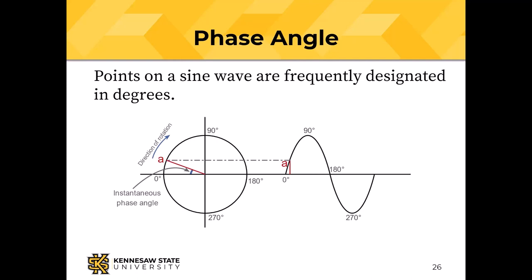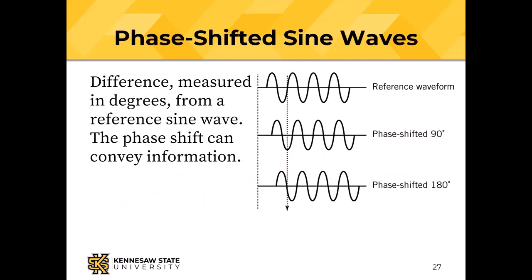Phase angle is discussed in degrees. At zero degrees the wheel starts; chalk at the top is 90 degrees; another half turn is 180 degrees; at 270 degrees the chalk is at the bottom; at 360 we're back to zero. A phase shift of 90 degrees shifts the waveform; at 180 degrees we're essentially halfway around.